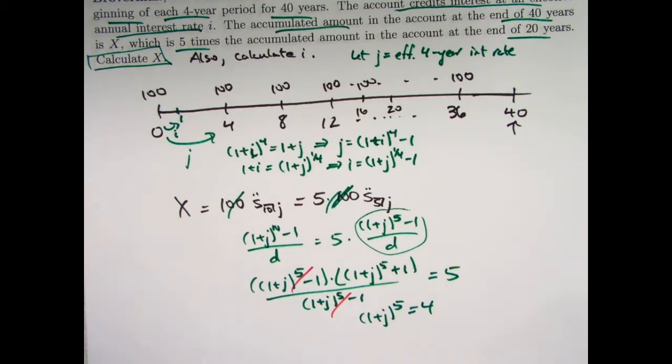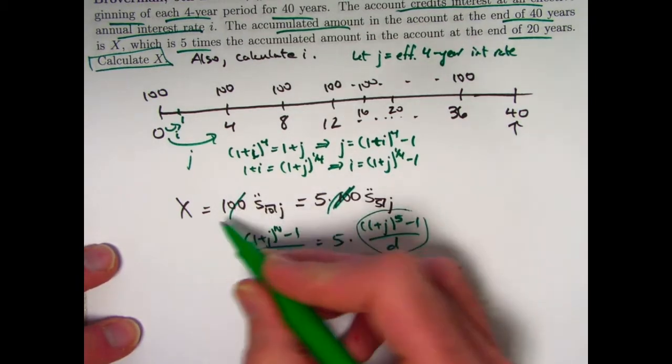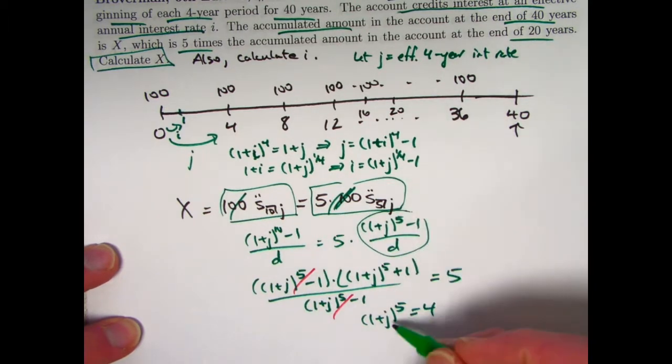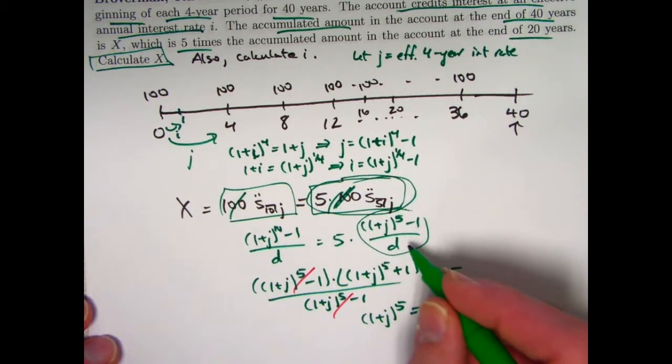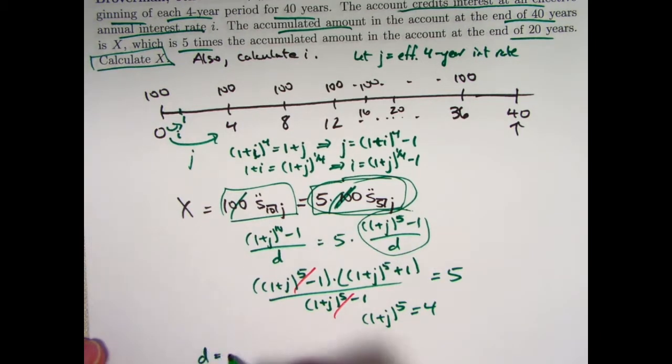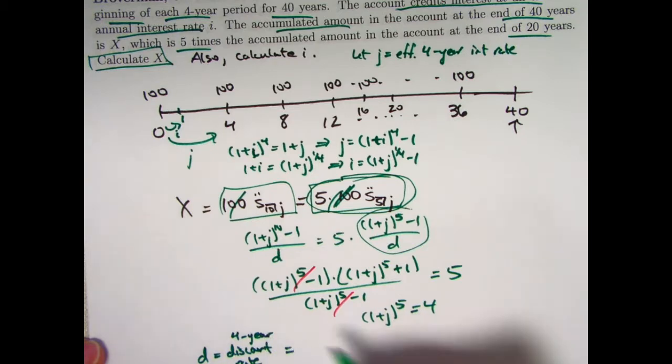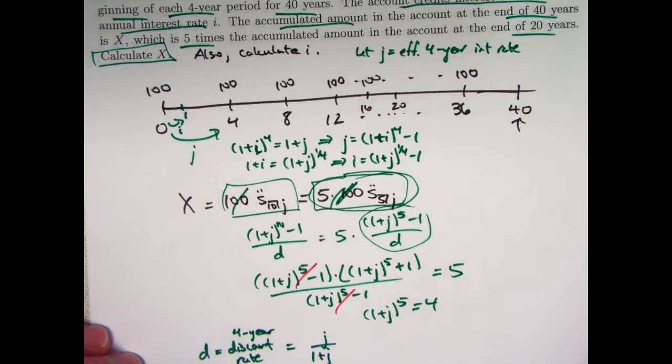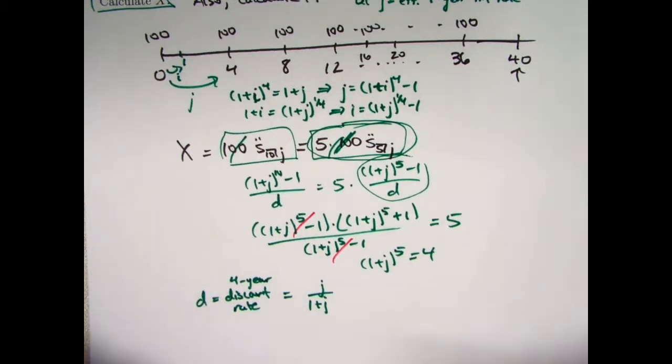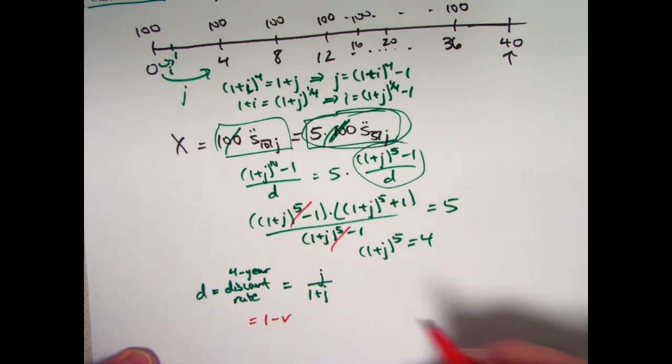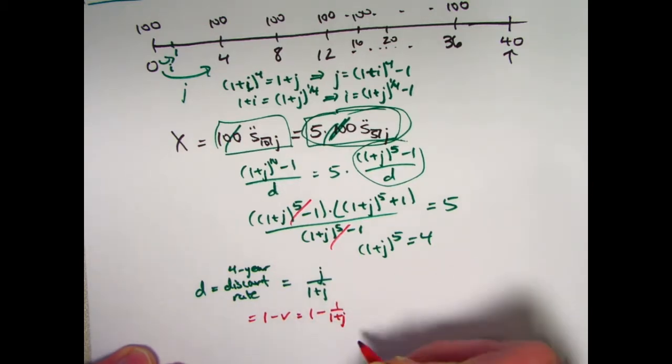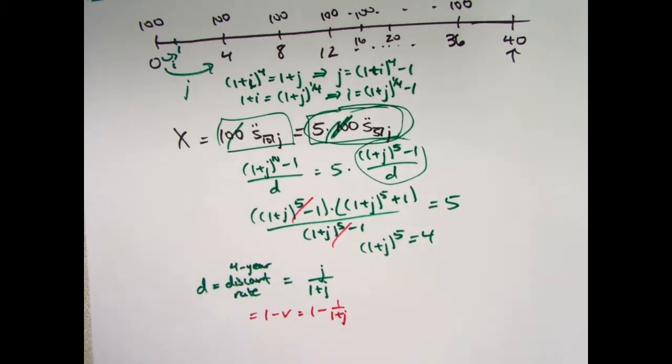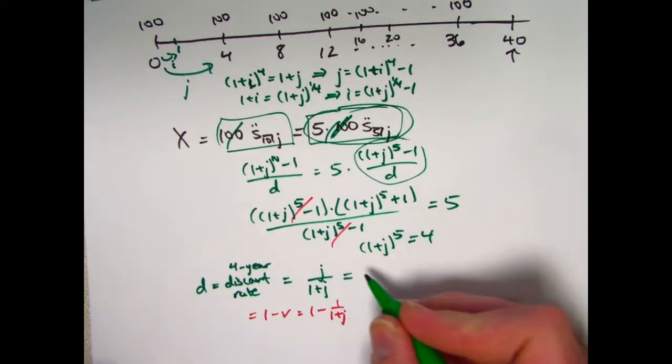Again, the goal is to calculate x. We can use either of these expressions to calculate x. It doesn't matter which one. Since we have (1+j)^5 and we'll need that for this thing here, it's probably easiest to use this expression to calculate x. I am going to need to calculate d if I need to use this formula here. d is the discount rate. I'm picking it to be the four-year discount rate. It equals j/(1+j). That's an equation we've seen before. If you forgot that, you could derive it as more simply, you might remember it's 1 minus v, where v would be the four-year discount factor, where v in this case would be 1/(1+j), and then you could subtract those fractions and do appropriate cancellation to get this formula for the discount rate.